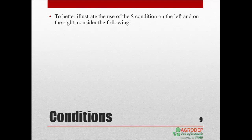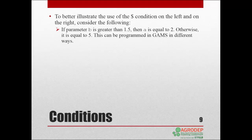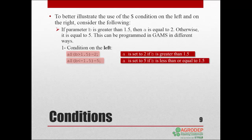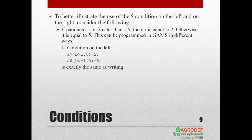To better illustrate the use of the dollar condition on the left and on the right, consider the following example where we want to express: if b is greater than 1.5, then a is equal to 2, else it is equal to 5. In GAMS, we can write this condition in different ways. Using dollar condition on the left, this assignment sets a to 2 if b is greater than 1.5, and this assignment sets a to 5 otherwise, or if b is less than or equal to 1.5. Of course, only one of these conditions can be true.